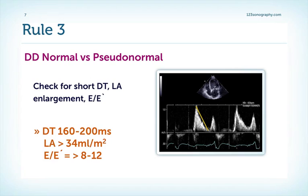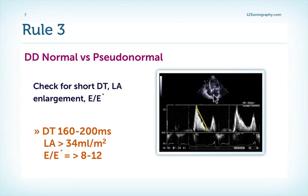If you want to be 100% sure, you can also perform other measurements — for example, you can look at the deceleration time or the E to E prime ratio. You can also use the 2D image, because patients who have elevated filling pressures usually also have an enlargement of the left atrium.